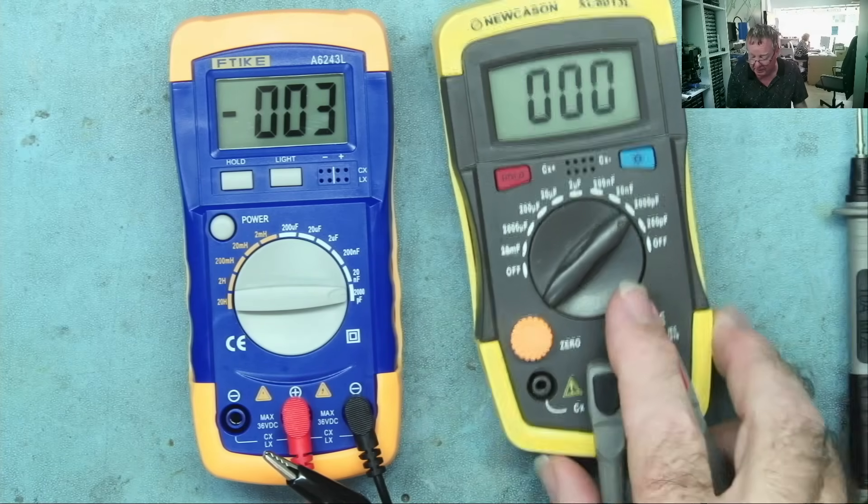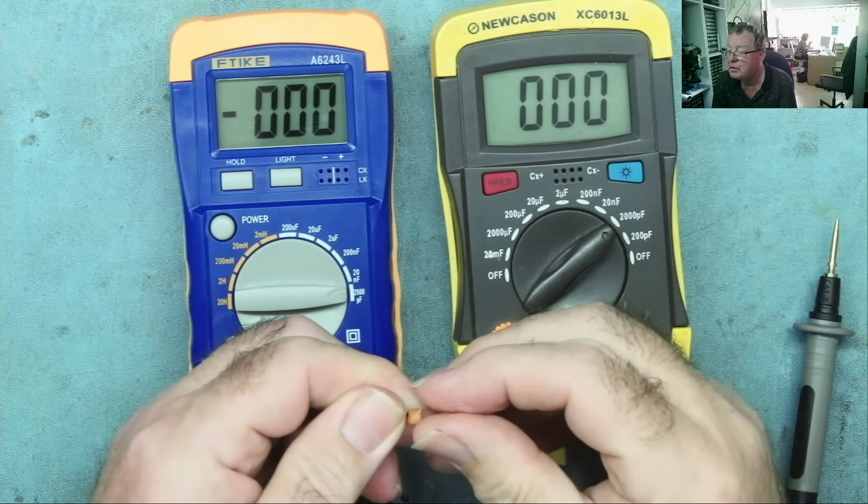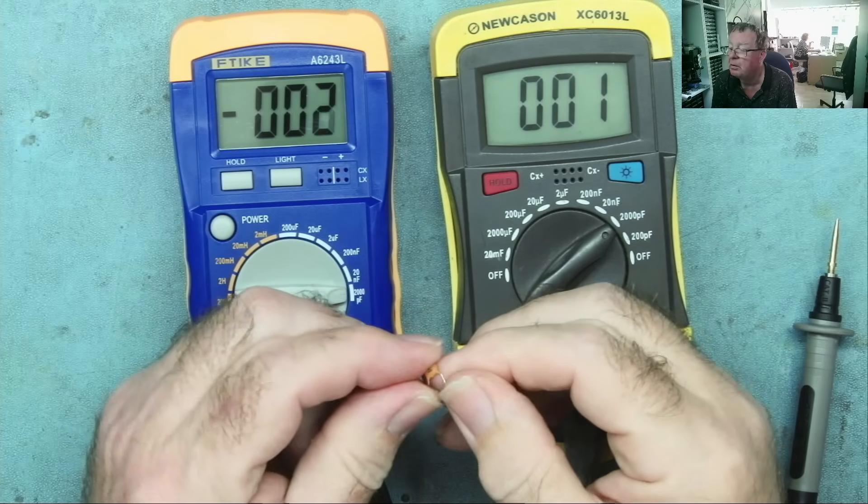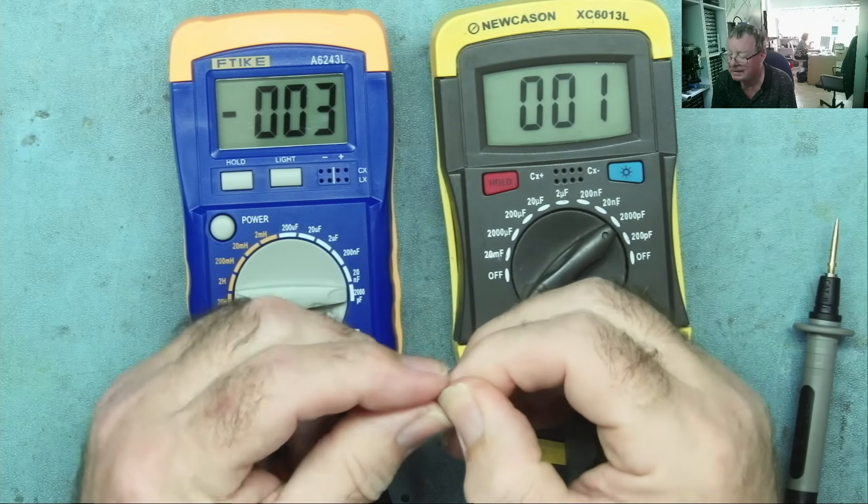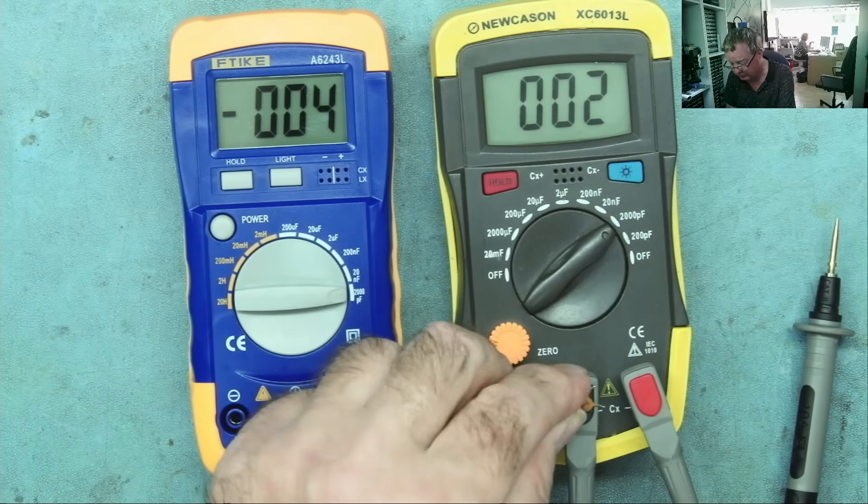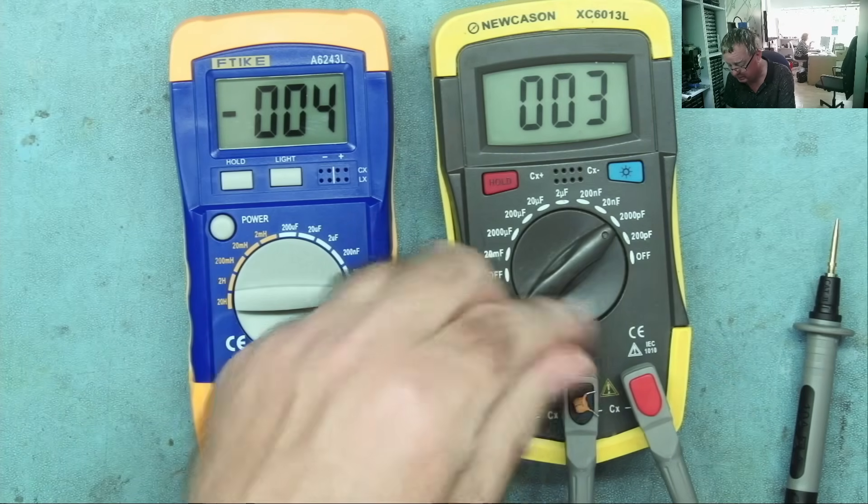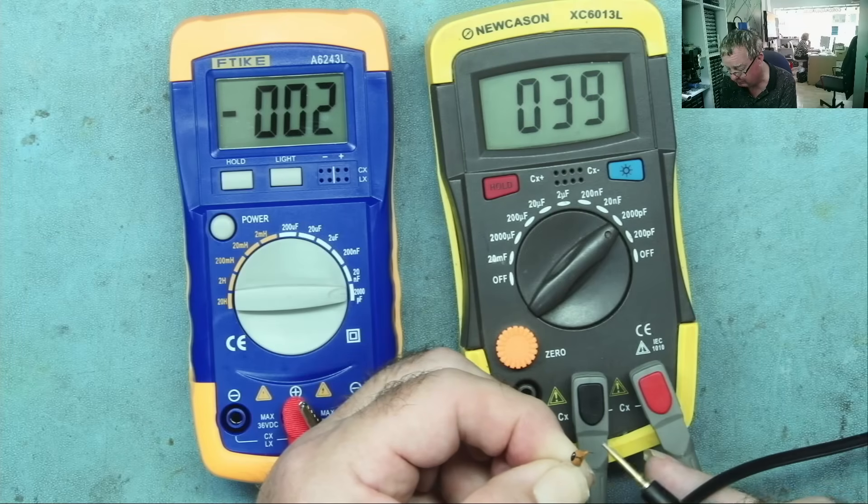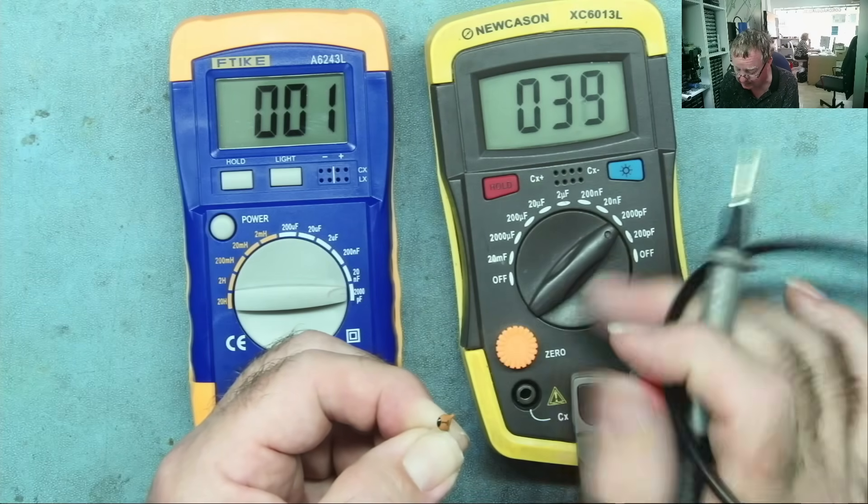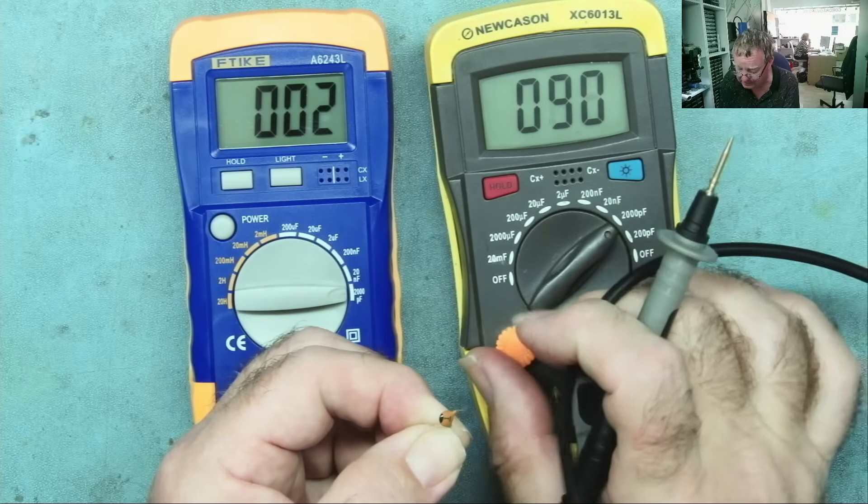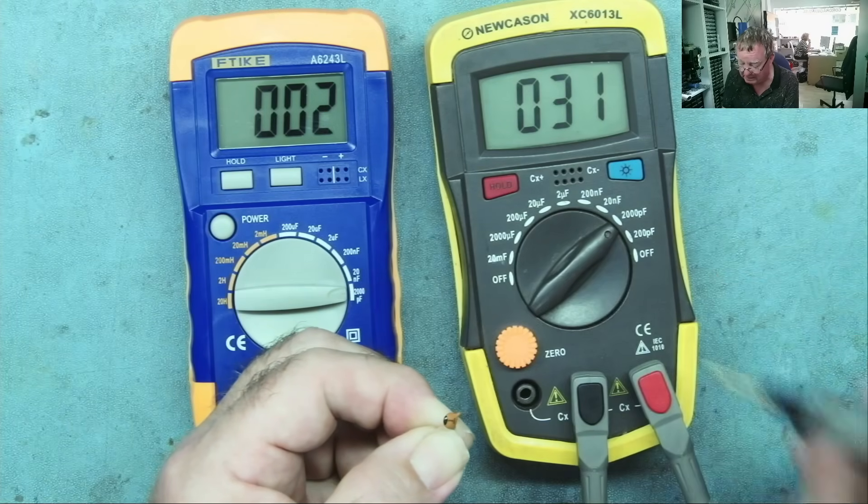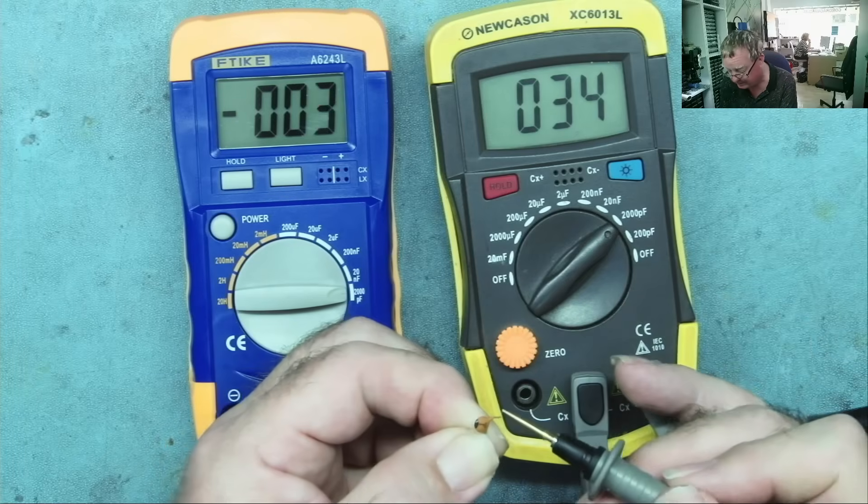We'll try a smaller capacitor. These are 1 picofarad, which is probably the smallest you're likely to come across, to be honest, unless there's some sort of specialized use. So we can just try again on my capacitance meter. Well, it doesn't actually want to read that. Or maybe it does. So it's not zeroed at the moment. So it's saying 39. There is a zero control on here, but it doesn't seem to zero properly.